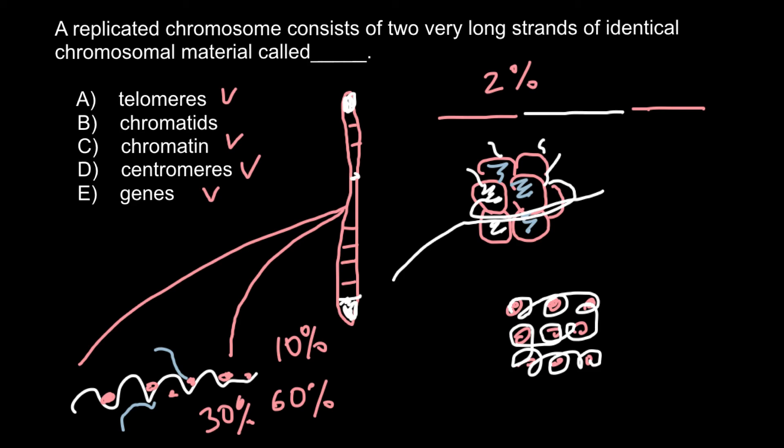Before that, the number of chromosomes has to double, so each daughter cell would receive the same amount of chromosomes as the mother cell. Here is our chromosome.